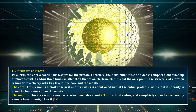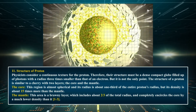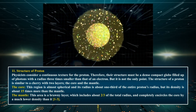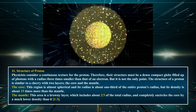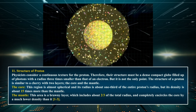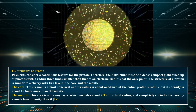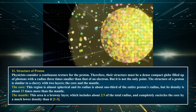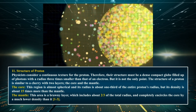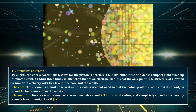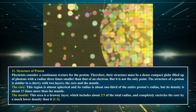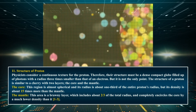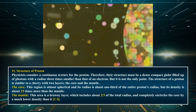The structure of a proton is similar to a cherry with two layers: the core and the mantle. The core is almost spherical with a radius about one-third of the entire proton's radius, and its density is about 15 times more than the mantle. The mantle is a layer which includes about two-thirds of the total radius and completely encircles the core with a much lower density.